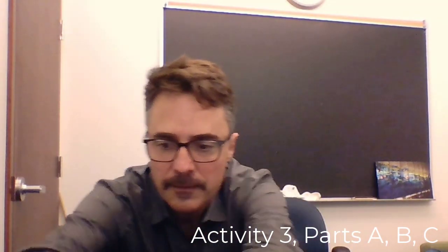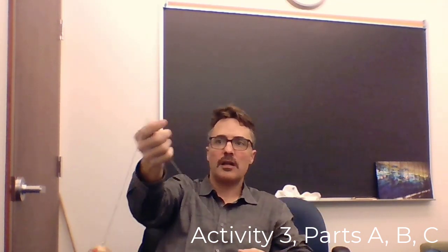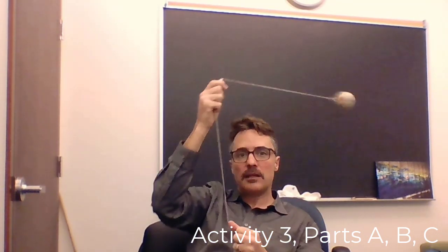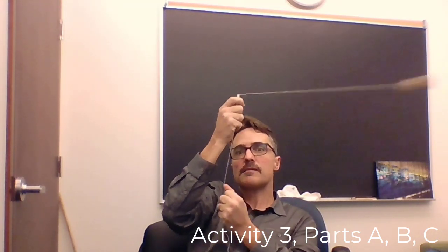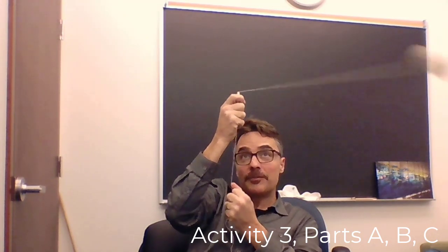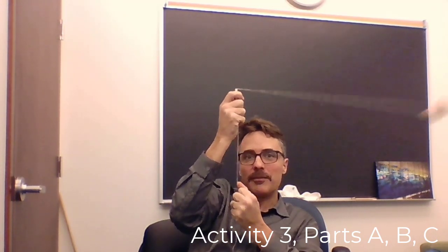There are two parts to Activity 3 or two observations. The observation for parts A, B, and C is Uniform Circular Motion. So what we're going to do is take this object and the straw and I'm going to twirl it around my head in Uniform Circular Motion. Maybe a big circle like that. So that's Uniform Circular Motion. Hopefully I don't hit my head with it.